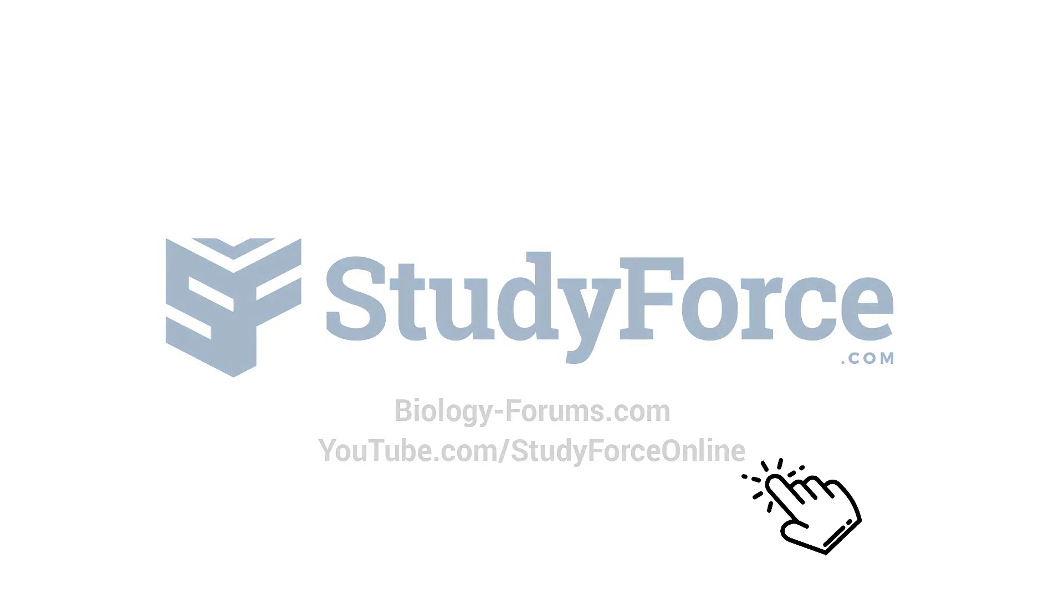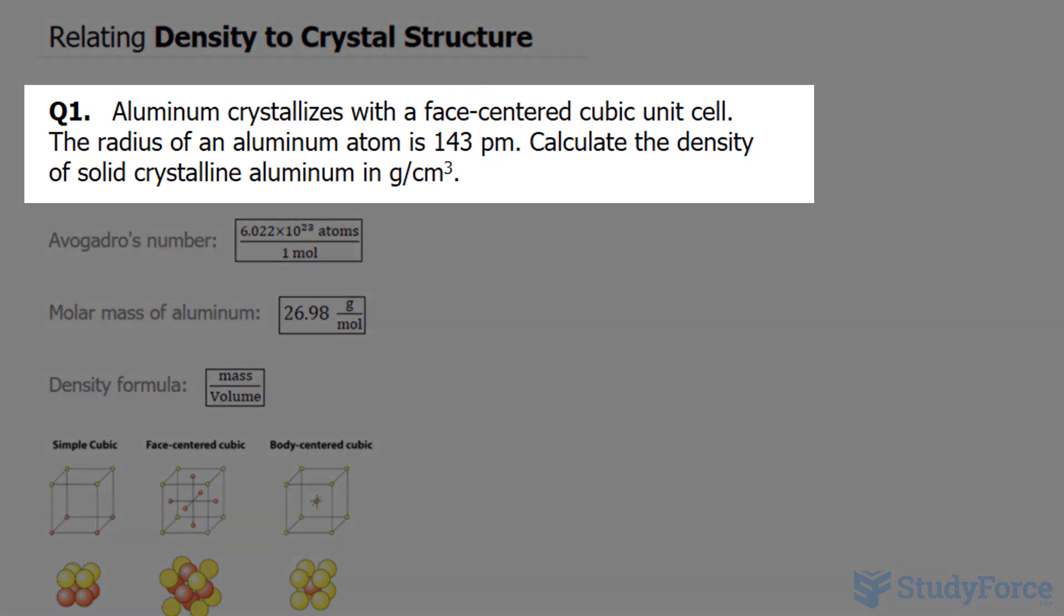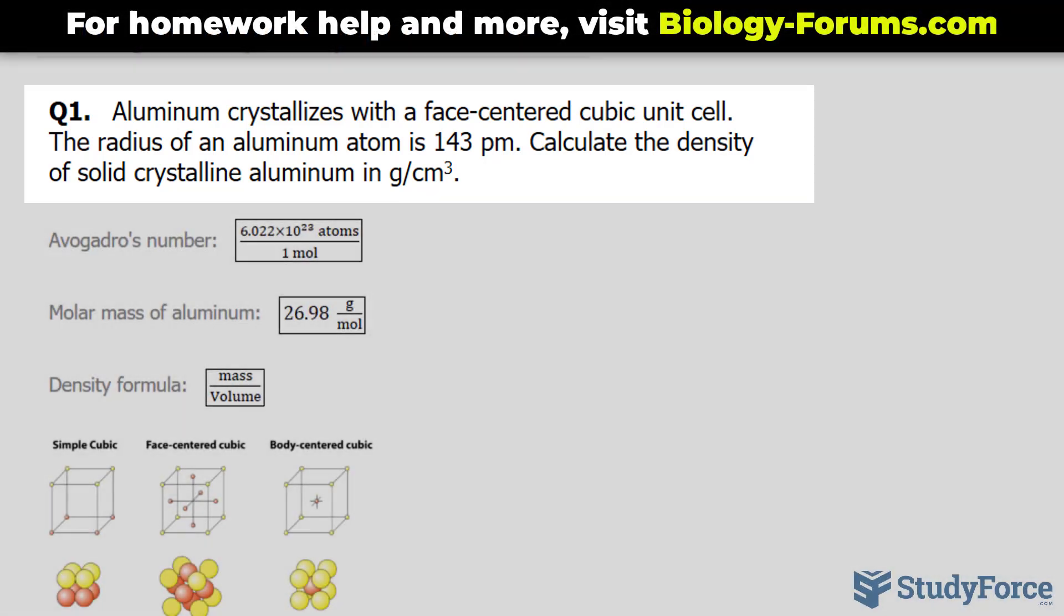In this lesson, we'll go through two examples where we relate density to crystal structure. The first question reads: aluminum crystallizes with a face-centered cubic unit cell. The radius of an aluminum atom is 143 picometers. Calculate the density of solid crystalline aluminum in grams per centimeters cubed.